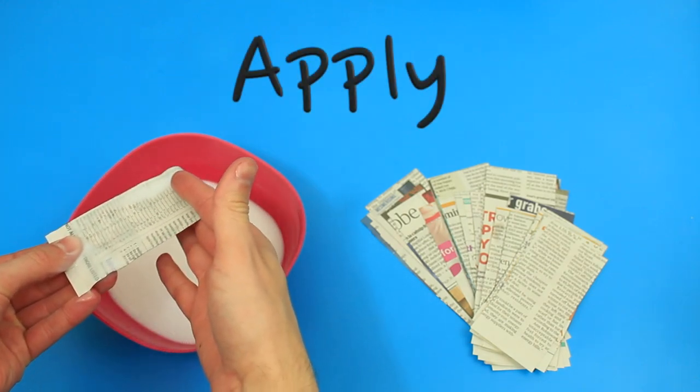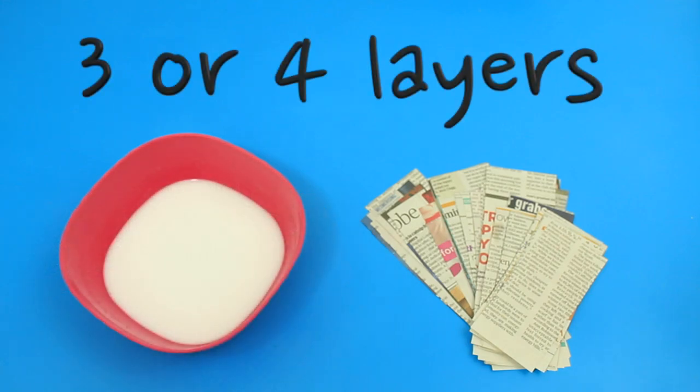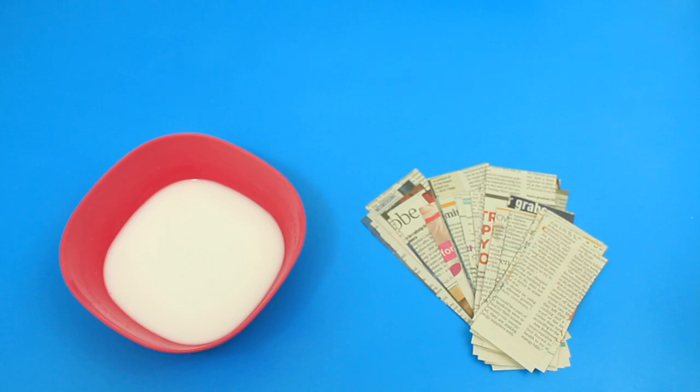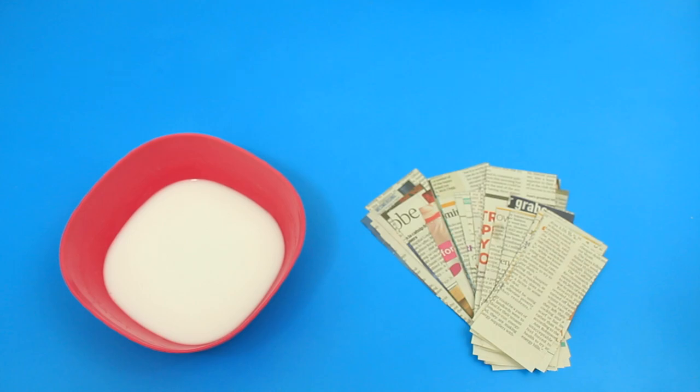Your project will need approximately three or four layers of paper mache depending on how strong you want it to be, and it's a good idea to let each layer dry fully before applying another one. Cool, and that's how you make paper mache!